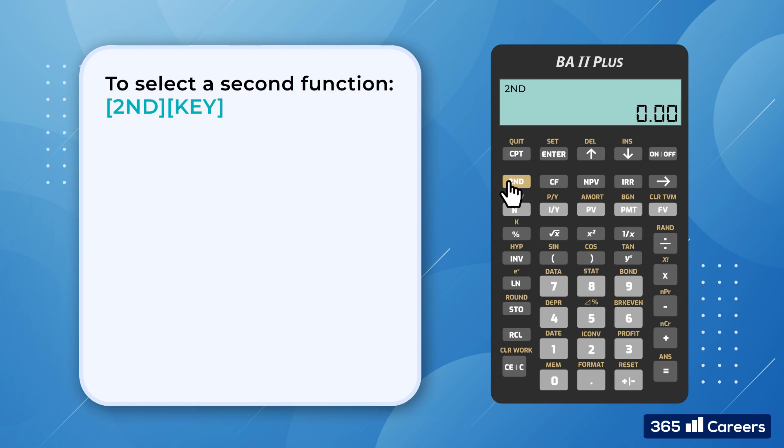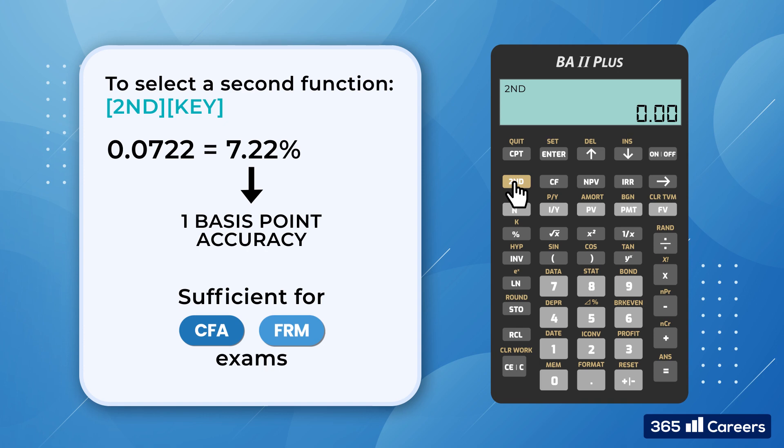For a significant part of the financial problems we will encounter, this setting would not be sufficient to obtain the correct answer. So I advise setting the number of decimal places to at least 4. Can you guess the reason I choose 4 decimal places? If we get 0.0722, we know we've got 7.22%.